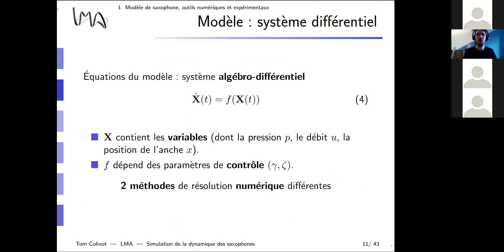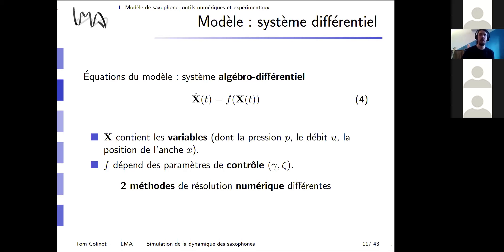To describe this complex behavior, we must adopt specific tools. I reformulate the equations of the model as an algebraic differential system, where the vector X contains the physical variables P, U, and the reed position x, and there is a function F depending on the control parameters gamma and zeta. I used two radically different methods of numerical resolution during my PhD.